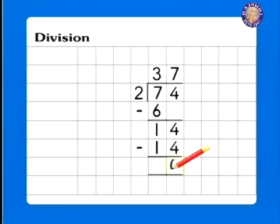So, the answer to 74 divided by 2 is 37. La-dee-da! We're getting rather good at this, aren't we?